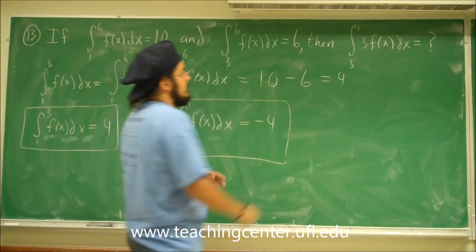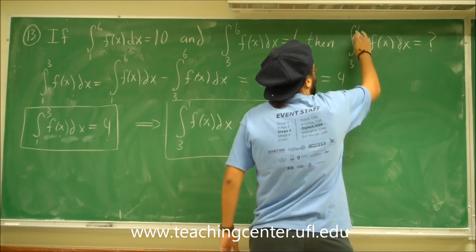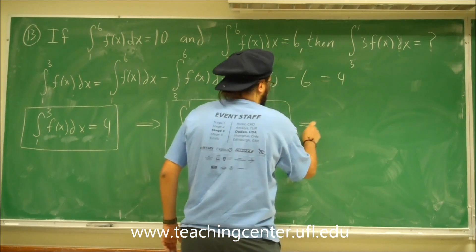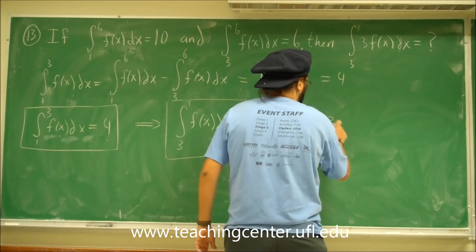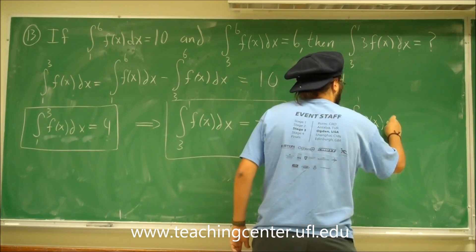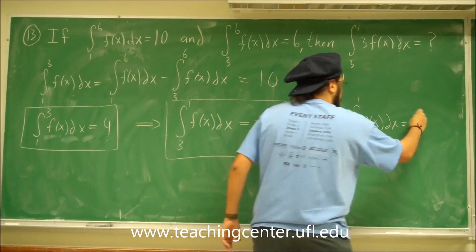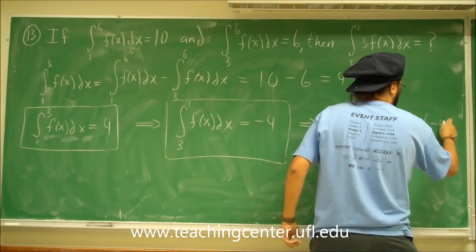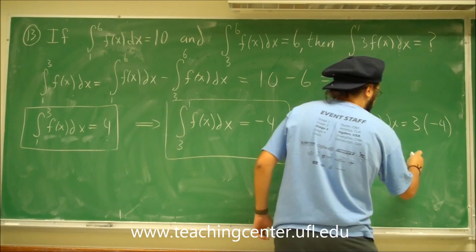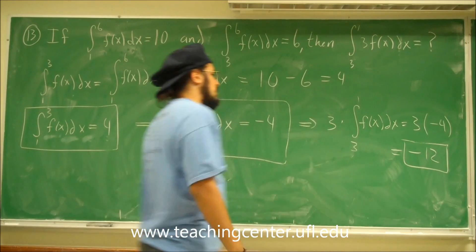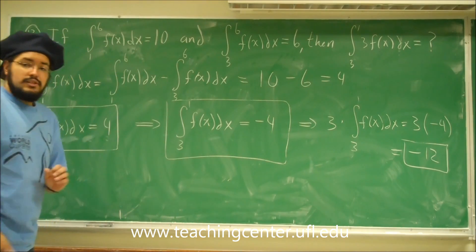Because now we have from 3 to 1 of f of x dx. This 3 can be brought outside. So this implies that 3 times the integral from 3 to 1 of f of x dx is equal to 3 times this whole thing right here. It's negative 4 and that's just 3 times negative 4 and negative 12. So the answer is negative 12.